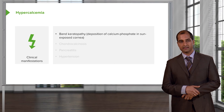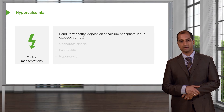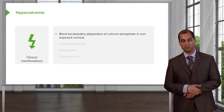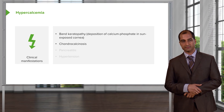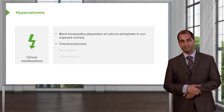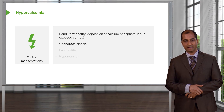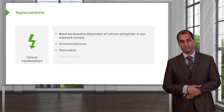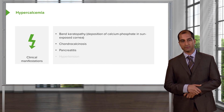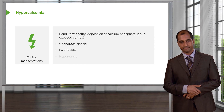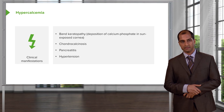There will be band keratopathy — deposition of calcium phosphate in the sun-exposed cornea. Chondral calcinosis refers to accumulation of calcium near the epiphyseal plate in bone. Hypercalcemia may also bring about damage to the pancreas — once you've heard of saponification — and may cause pancreatitis and hypertension.